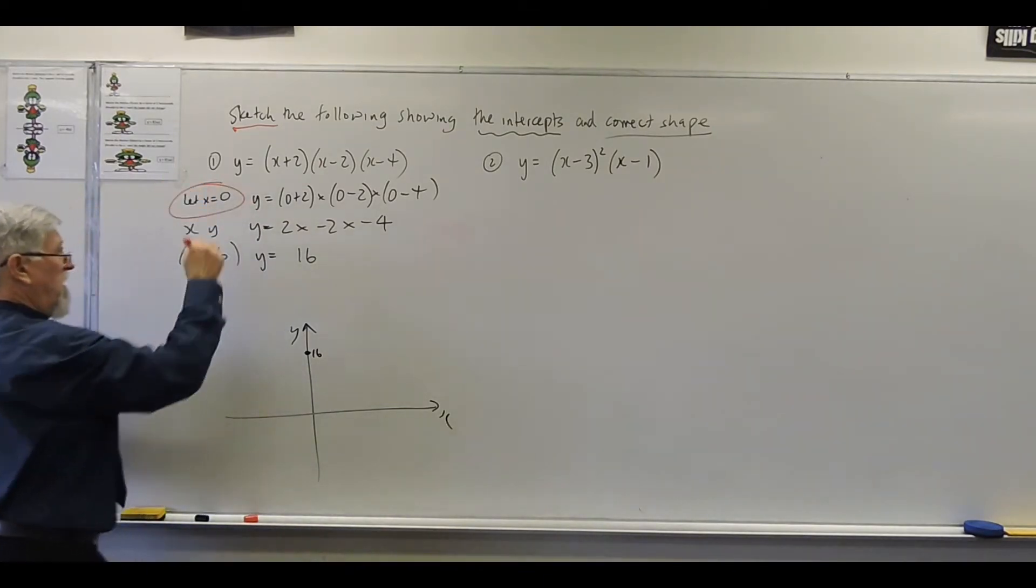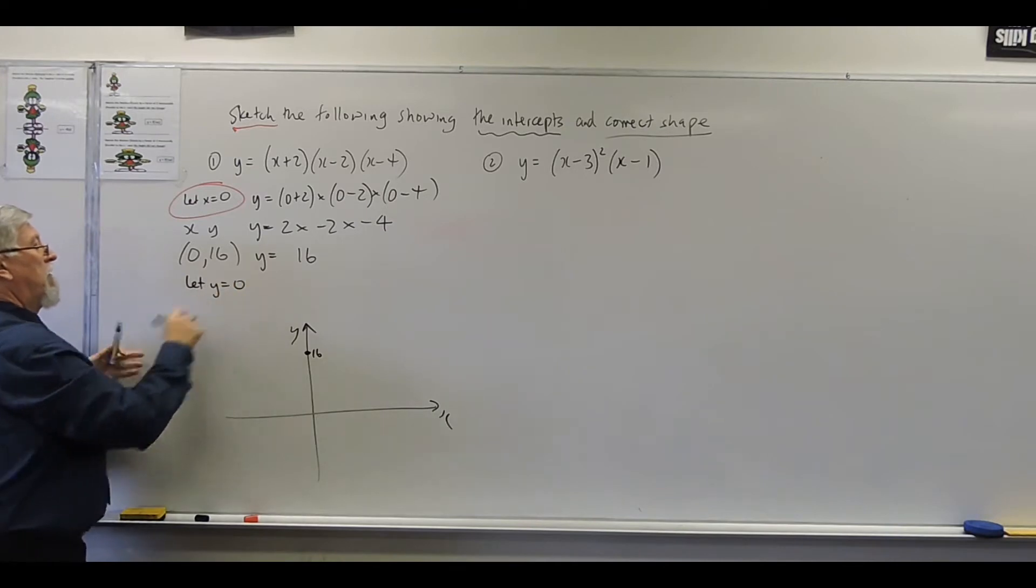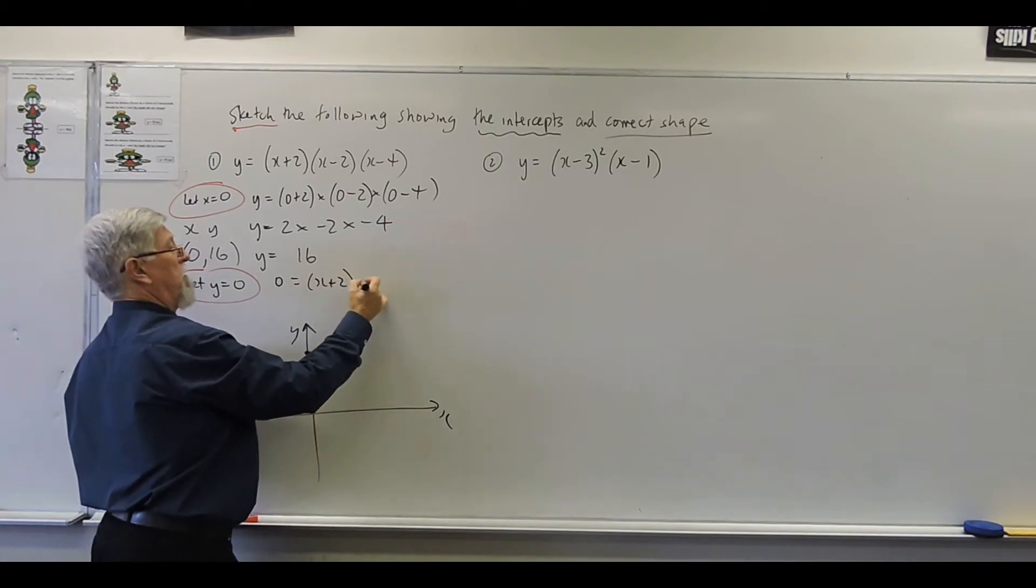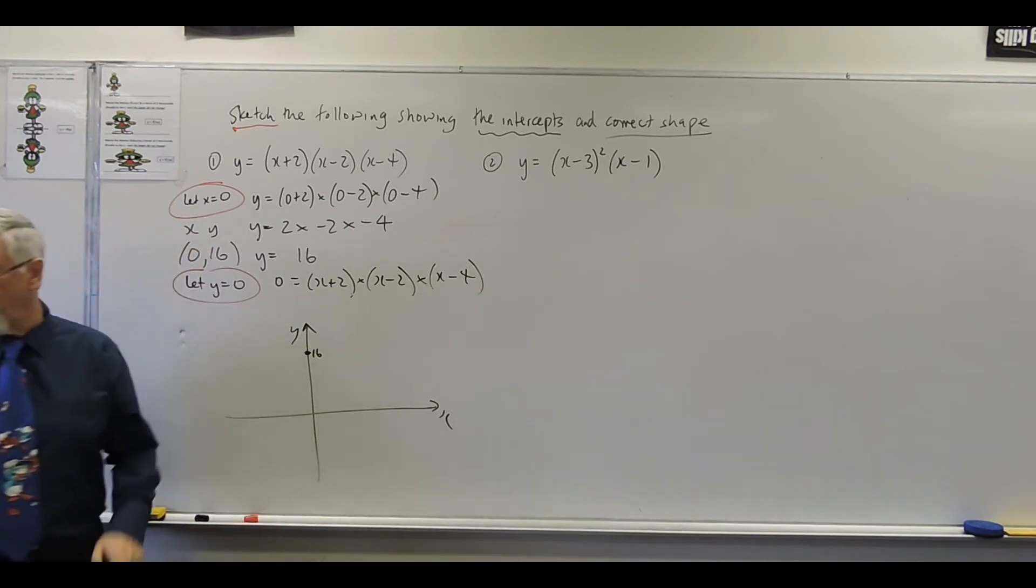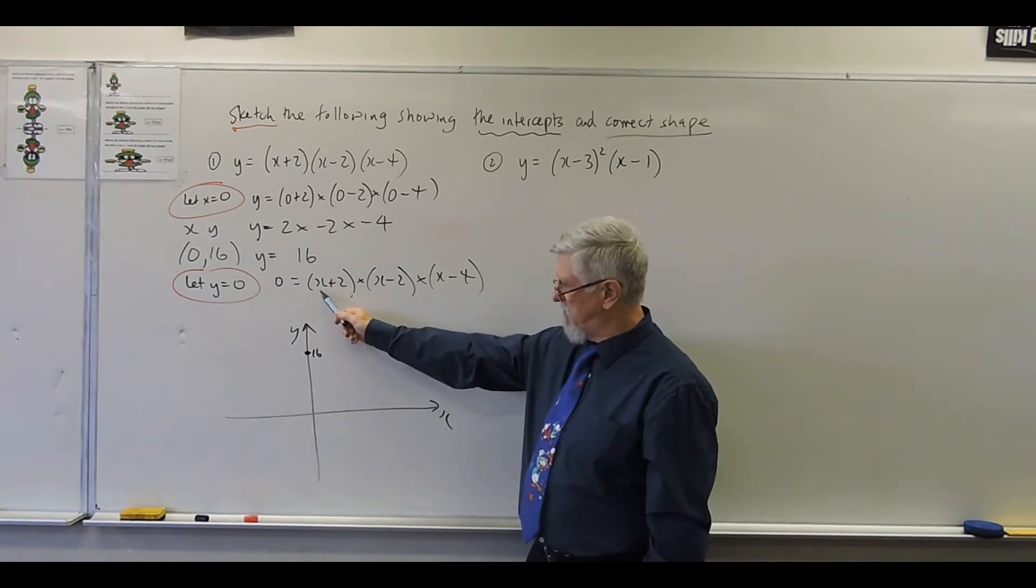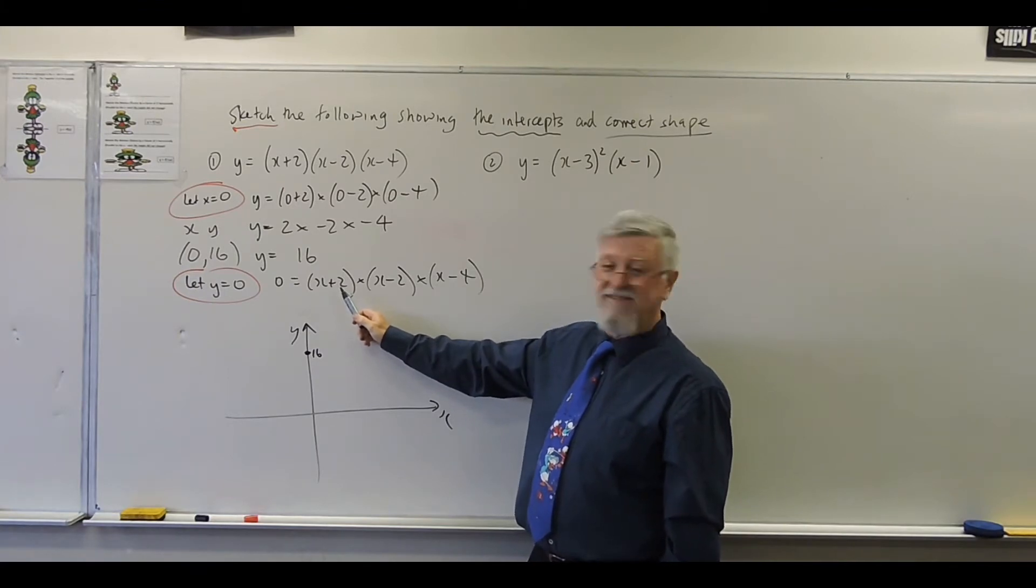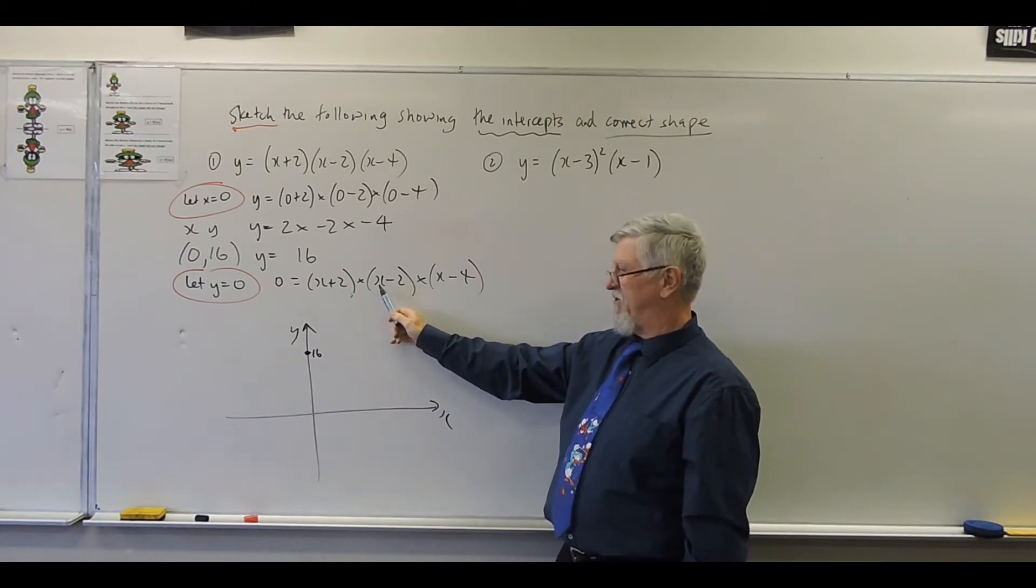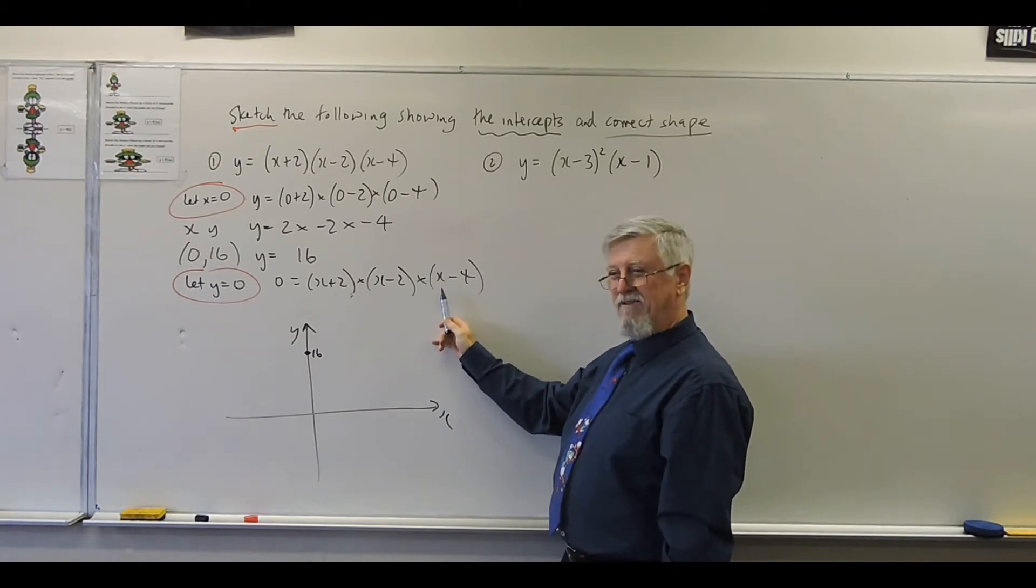So how do we do the other bit now? So we've done that x equal 0, so let's go to y equal 0. That one's finished. All that gave us was one point. We want more points. Well, let's let y equal 0. So now we've got 0 equals x plus 2 times by x minus 2. Why don't I put the times in? Just to nag you guys that we've got a multiplication in between there. So that has three possible answers. One of them is a minus 2. Because minus 2 plus 2 will give us 0. This one will be a 2 because a 2 minus 2 will give us 0. And this one will be a 4 because it will give us a 0.